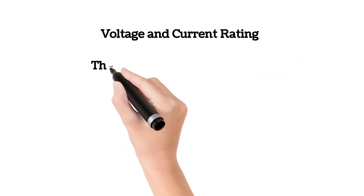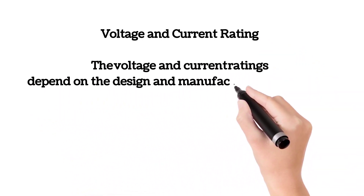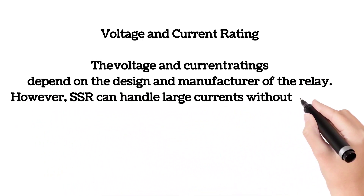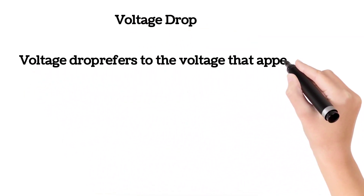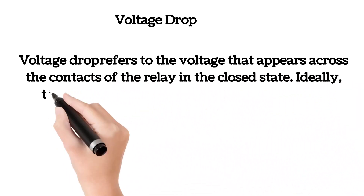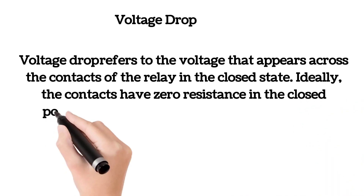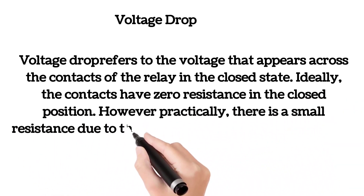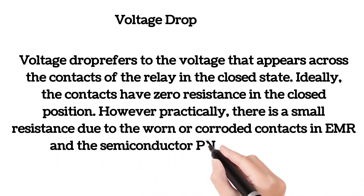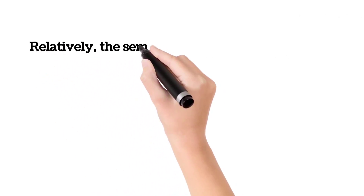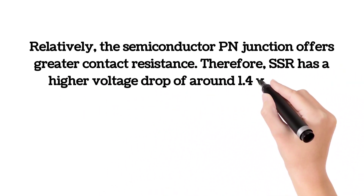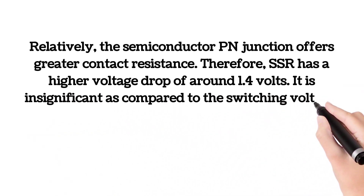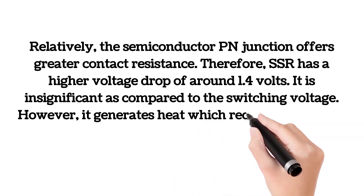Voltage and current rating: The voltage and current ratings depend on the design and manufacturer of the relay. However, SSR can handle large currents without worrying about sparks that could create hazards in a combustible environment. Voltage drop refers to the voltage that appears across the contacts of the relay in the closed state. Ideally, the contacts have zero resistance in the closed position. Practically, there is a small resistance due to worn or corroded contacts in EMR, and due to the semiconductor PN junction in SSR. The semiconductor PN junction offers greater contact resistance; therefore, SSR has a higher voltage drop of around 1.4 volts. This is insignificant compared to the switching voltage; however, it generates heat which requires large heat sinks.